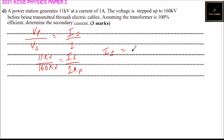Cross-multiplying, the current in the secondary equals 11 divided by 160, which gives 0.0688 amperes. That is the current in the secondary after stepping up using a step-up transformer. That brings us to the end of question 17.